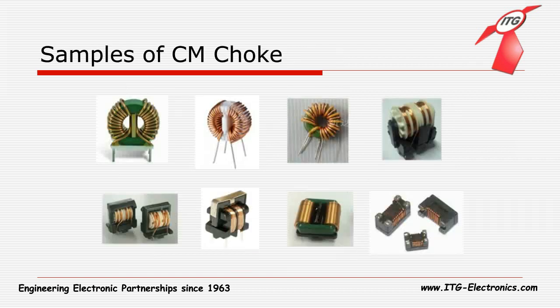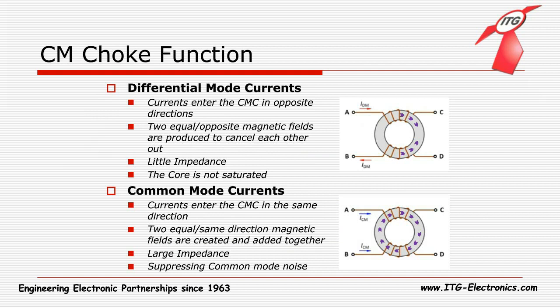Here we can see some pictures of different kinds of Common Mode Chokes. To further understand how a Common Mode Choke functions: when currents enter the Common Mode Choke in opposite directions, they produce two magnetic fields in the windings that cancel each other. The choke then presents very little inductance or impedance, and the core will not saturate even with large input currents. On the other hand, if the currents enter the Common Mode Choke in the same direction, the two magnetic fields add together to provide a very large inductance or impedance, which plays a role in suppressing common mode noise.